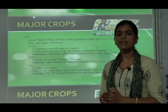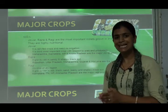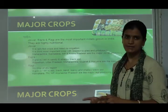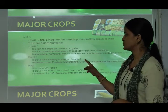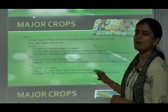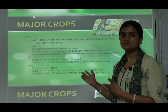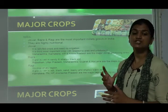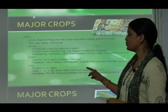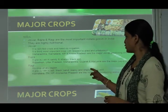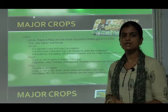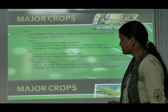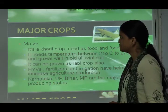Ragi is a crop of the dry region, meaning where the rainfall content is very less or there is no rainfall. It grows well in red, black, sandy loamy, and shallow black soil. Karnataka, Tamil Nadu, Himachal Pradesh, and Arunachal Pradesh are the major ragi-producing states.